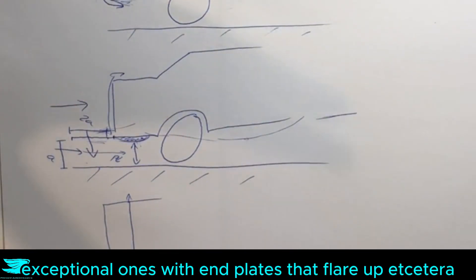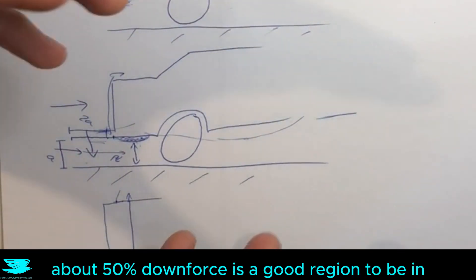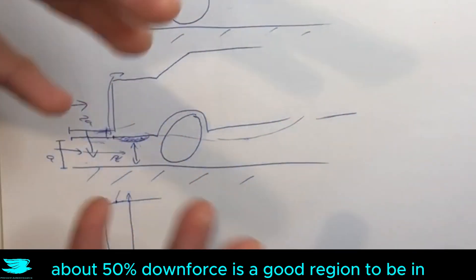Like there are some really exceptional ones with end plates that flare up, etc. And they can go even much higher than that. But generally speaking, about 50% downforce is a good region to be in.